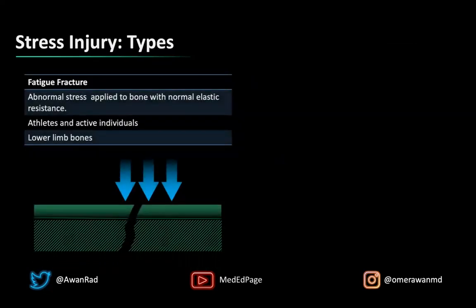To understand this, there are two types of stress injuries — or two types of stress fractures: fatigue fractures and insufficiency fractures. Fatigue fractures are abnormal stress applied to normal bone with normal elastic resistance. This typically occurs in athletes, young individuals — typically people subjected to chronic repetitive microtrauma. They're running often and for very long distances, and because of that chronic repetitive microtrauma, they injure and fracture their bones.